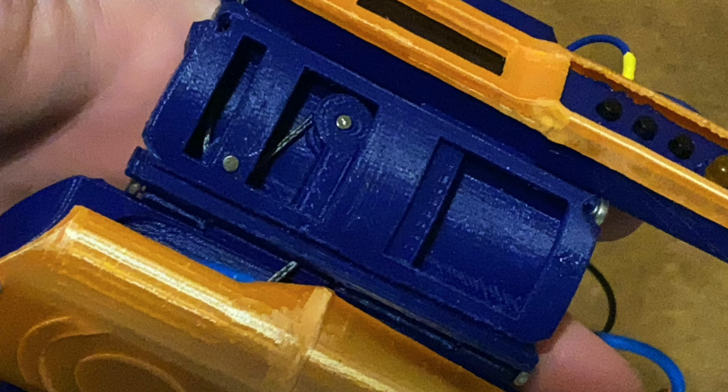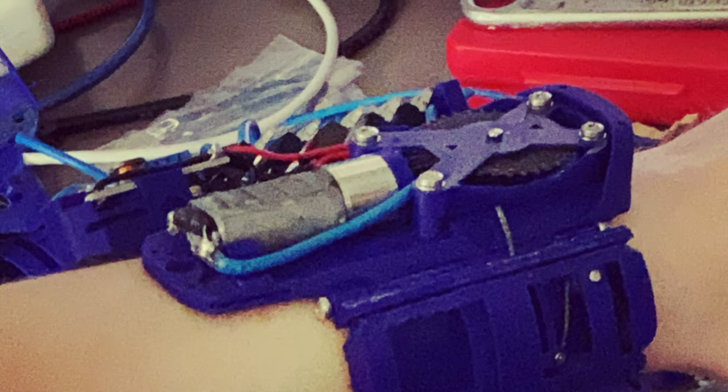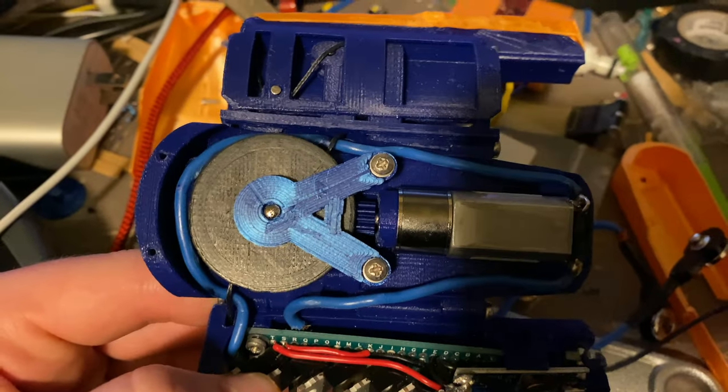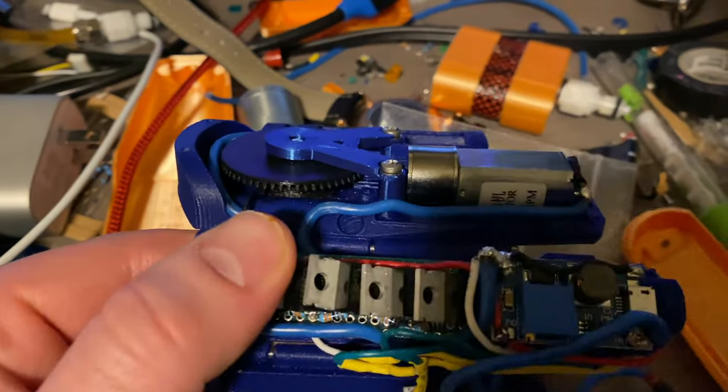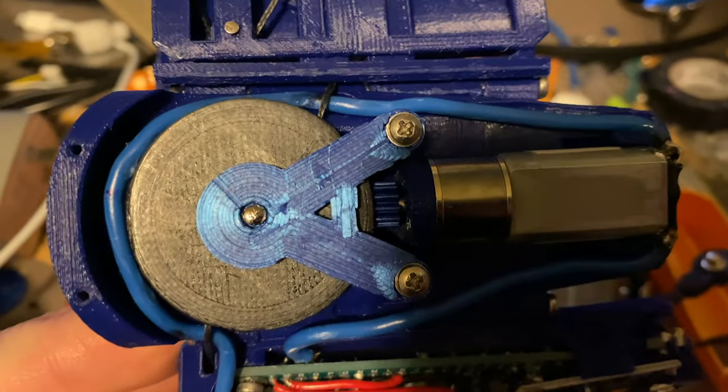As you can imagine, friction ended up playing a pretty big role here. I initially had a 3-to-1 bevel gear transmission in this unit, and then I had to up it to 5-to-1 when that didn't open the valve. Then when the 5-to-1 transmission didn't open the valve either, I had to do a really sneaky fix to get some extra leverage—that's what you see in this video.